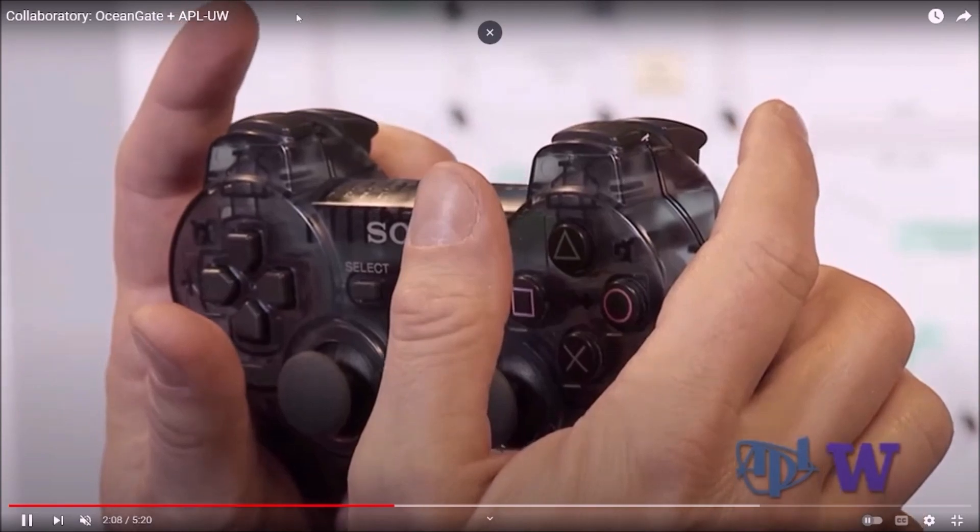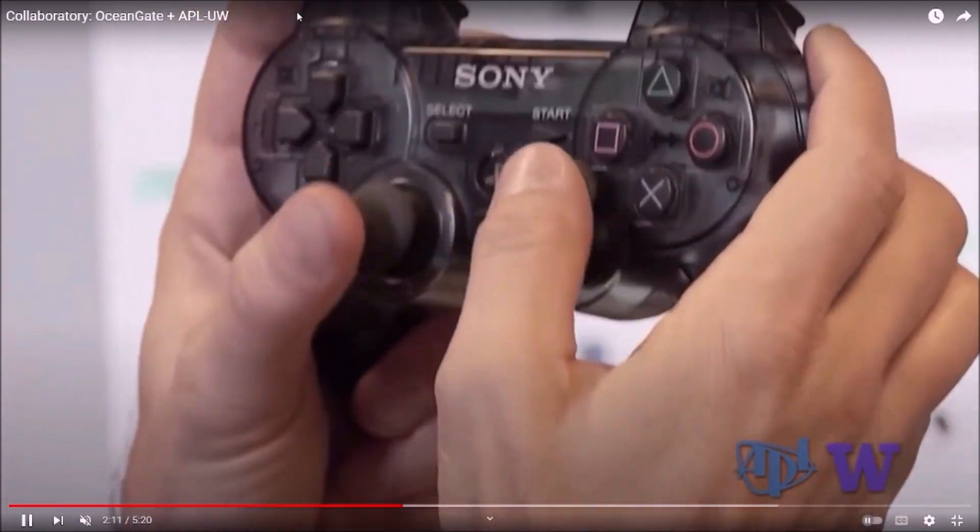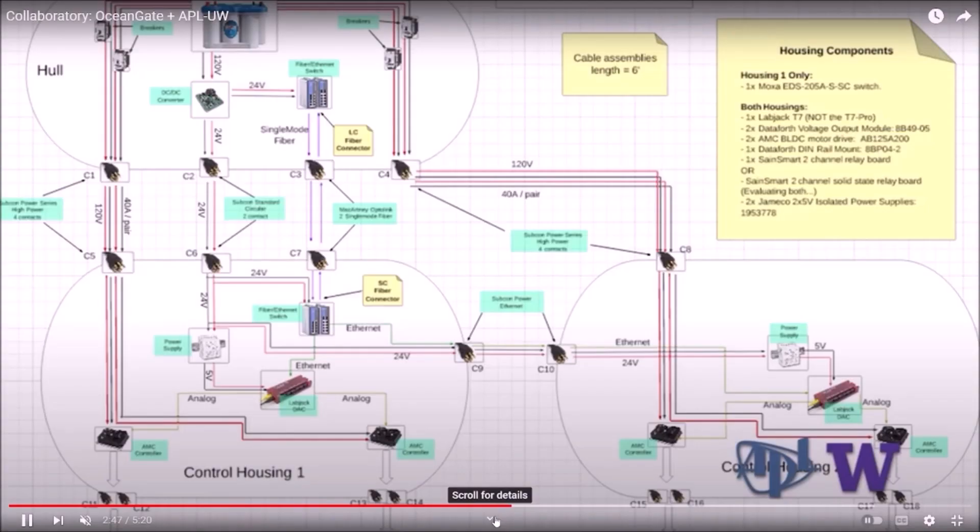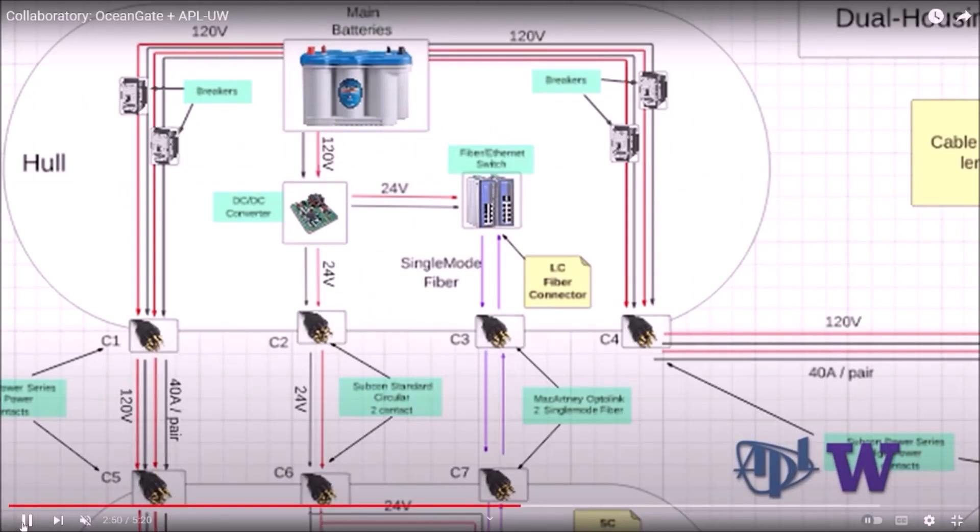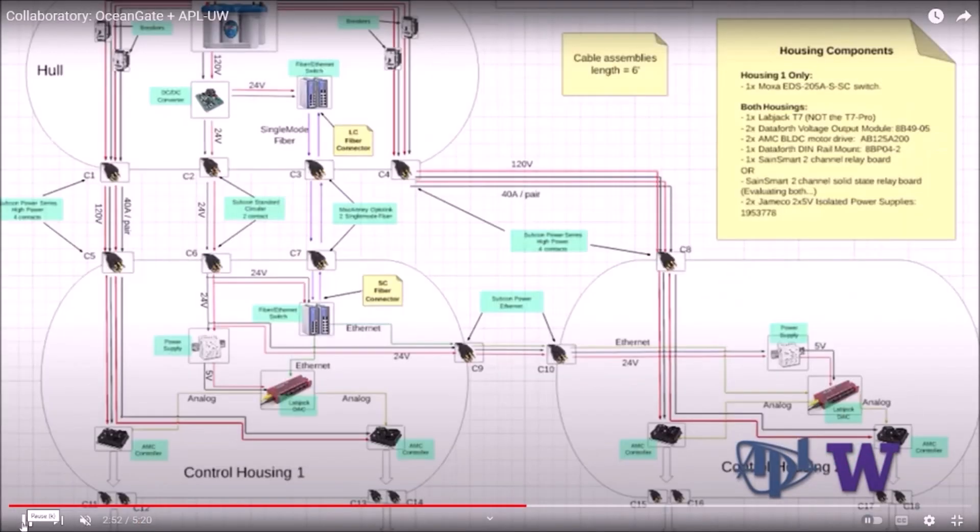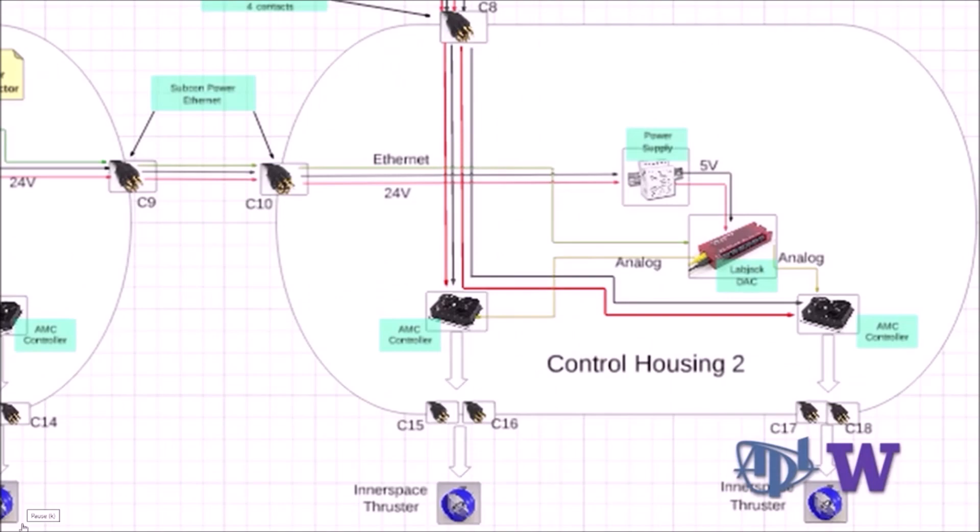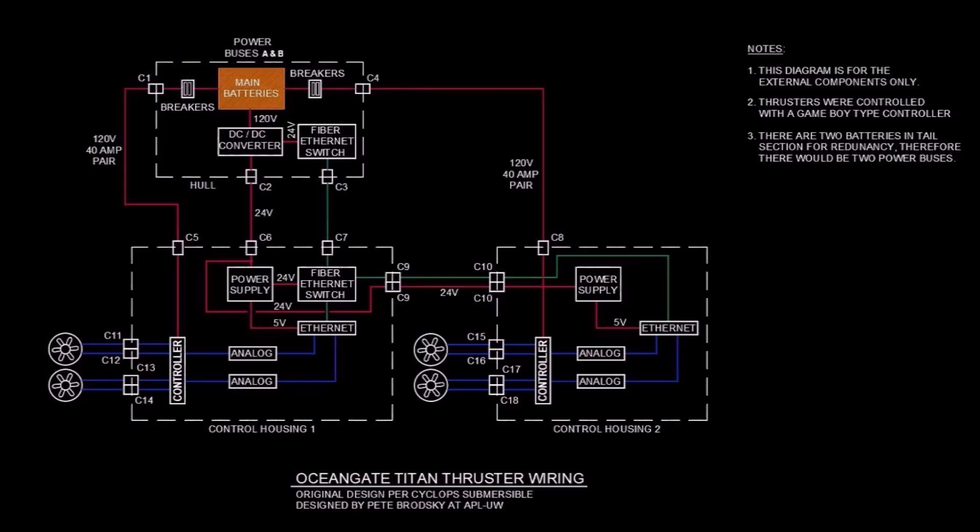So, let's start with the navigation system, also known as the thrusters. This system was designed by APLUW Principal Engineer Pete Brodsky for the Cyclops sometime around 2015, as far as I can tell. I am confident that the Titan used pretty much the same system. The challenge here for the designers was interfacing a game controller with the rest of the systems. In this diagram, we can see the basic scheme.